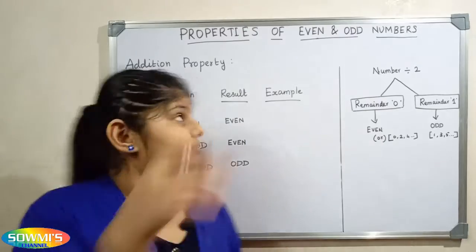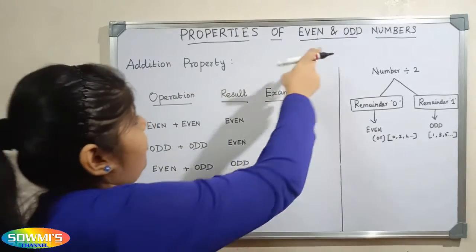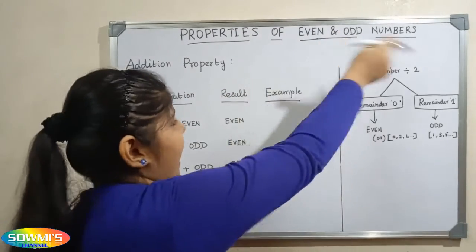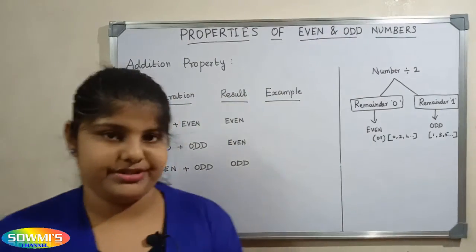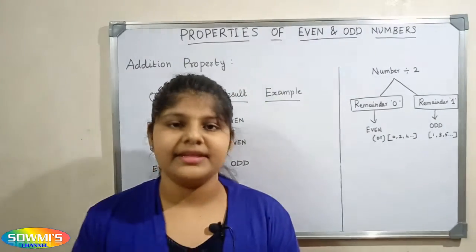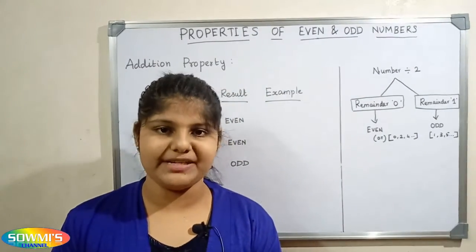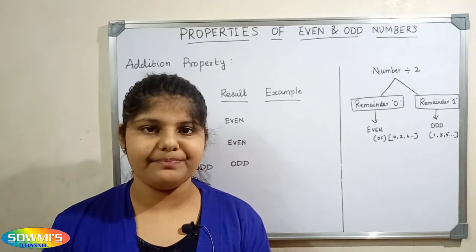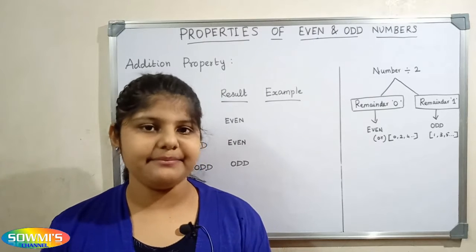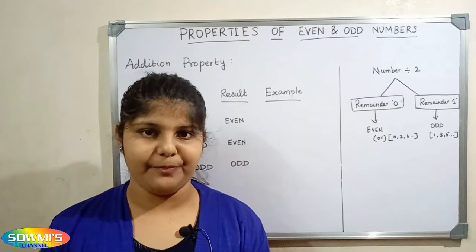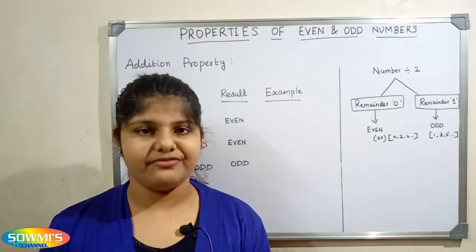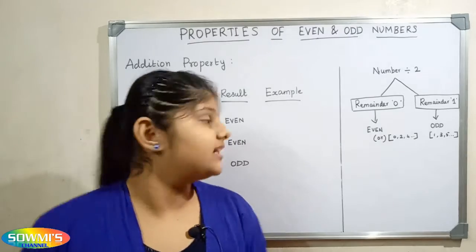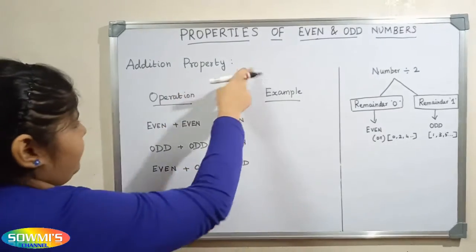There are three properties of even and odd numbers: addition property, subtraction property, and multiplication property. First we will see the addition property.